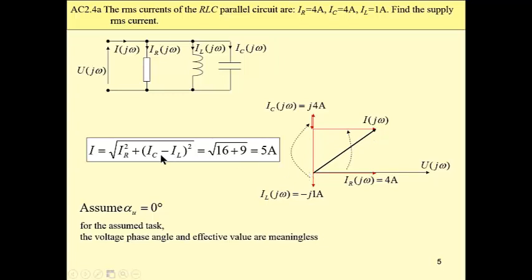One leg is four minus one, and the other leg is four. So, in total, the length of this phasor is five amperes, and this completes our calculations.